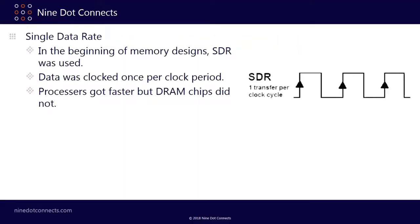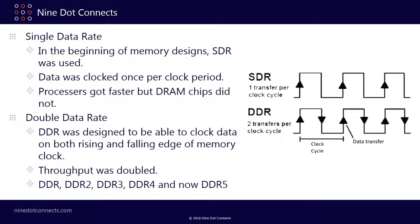A little history. Single data rate memory started this whole thing — data was clocked once per clock period. But as processors got faster, DRAM chips did not keep pace. So double data rate was designed to clock data on both the rising and falling edge of a memory clock. As you can see in this signal, data is clocked into DDR memory on both edges. Interestingly, even though throughput was doubled, the clock frequency didn't change.